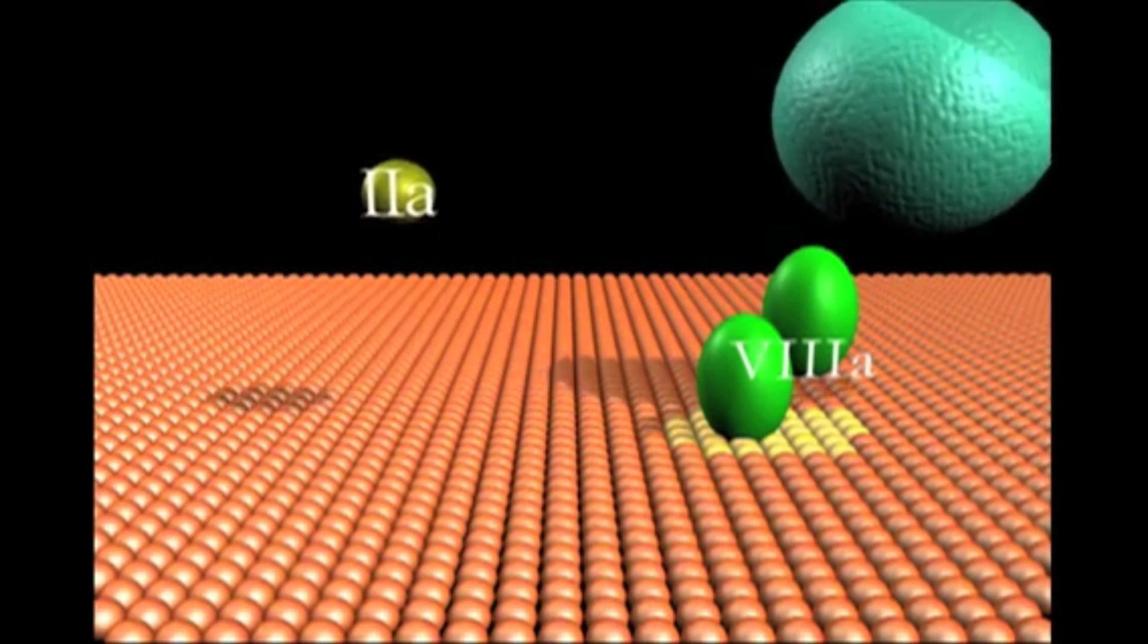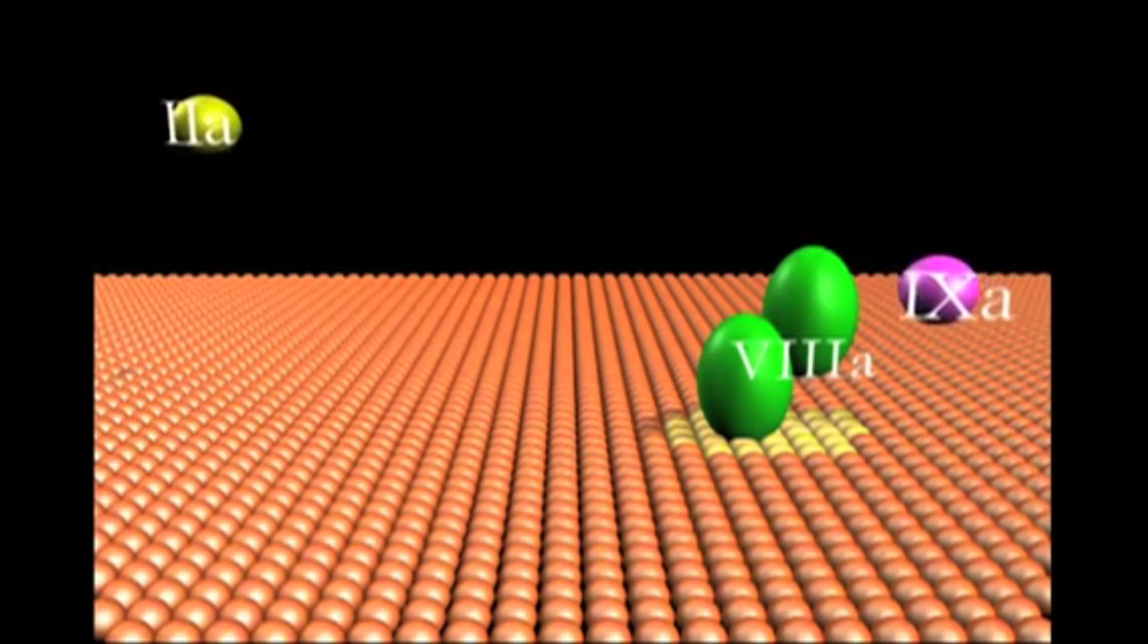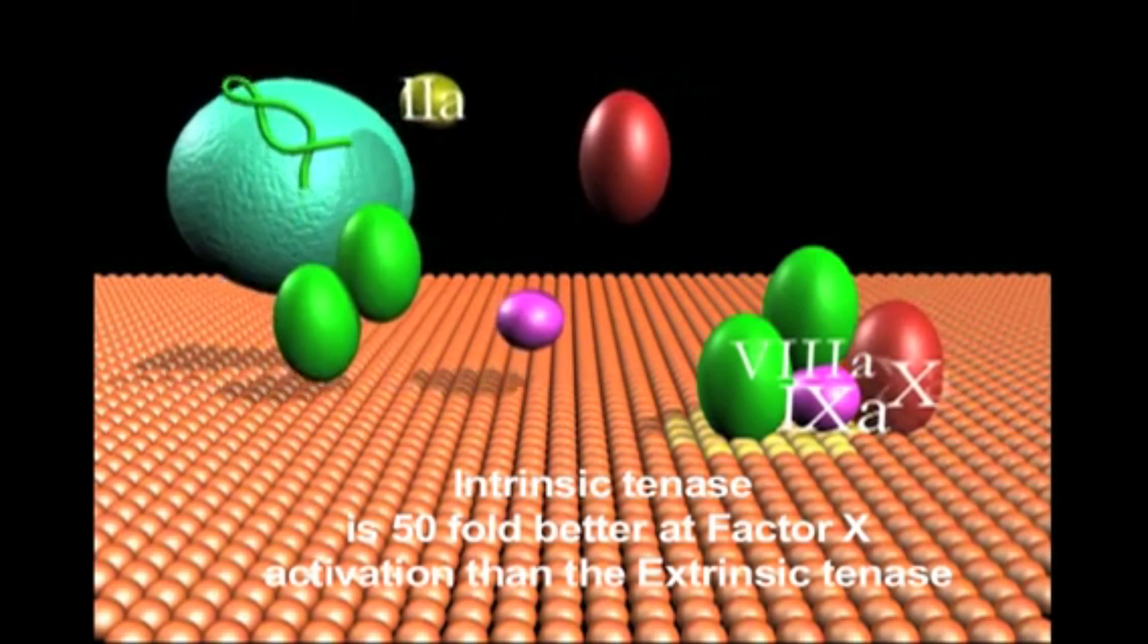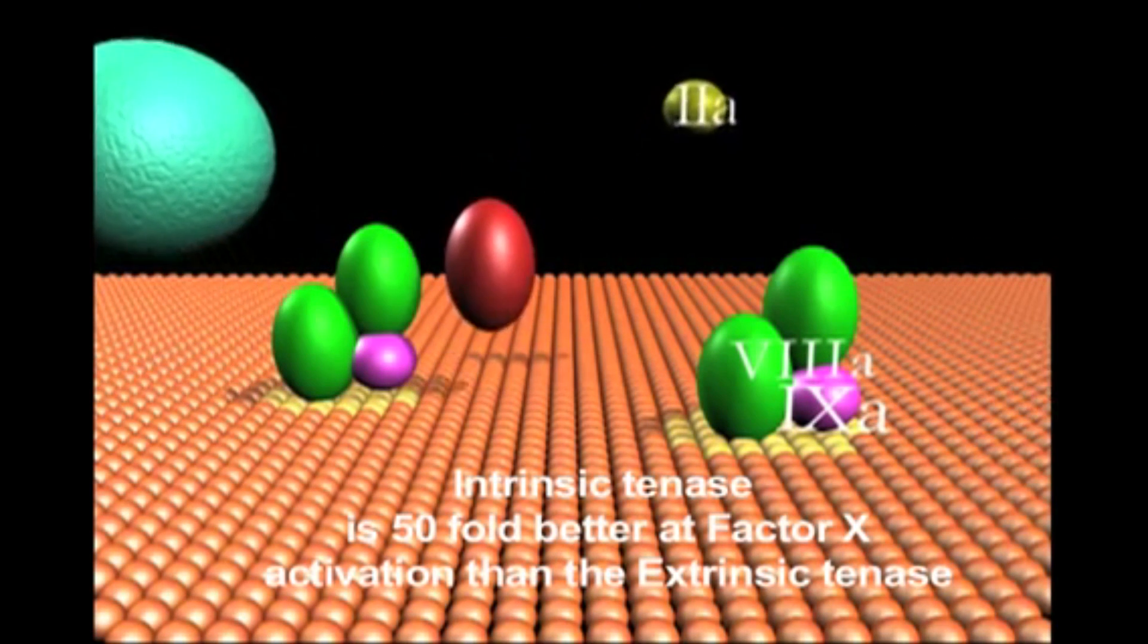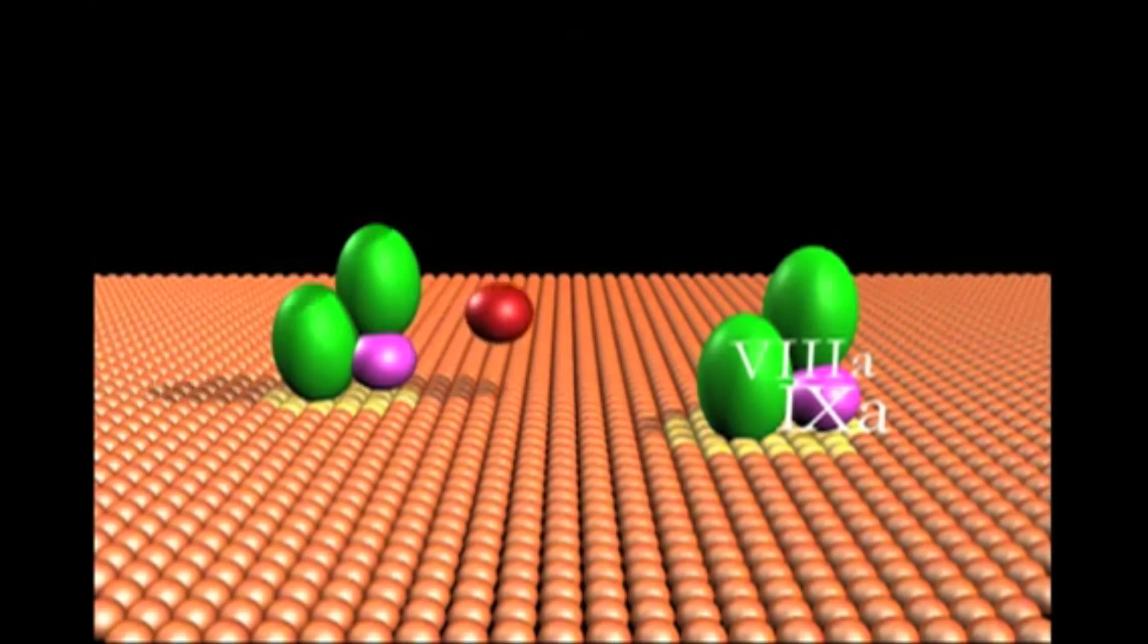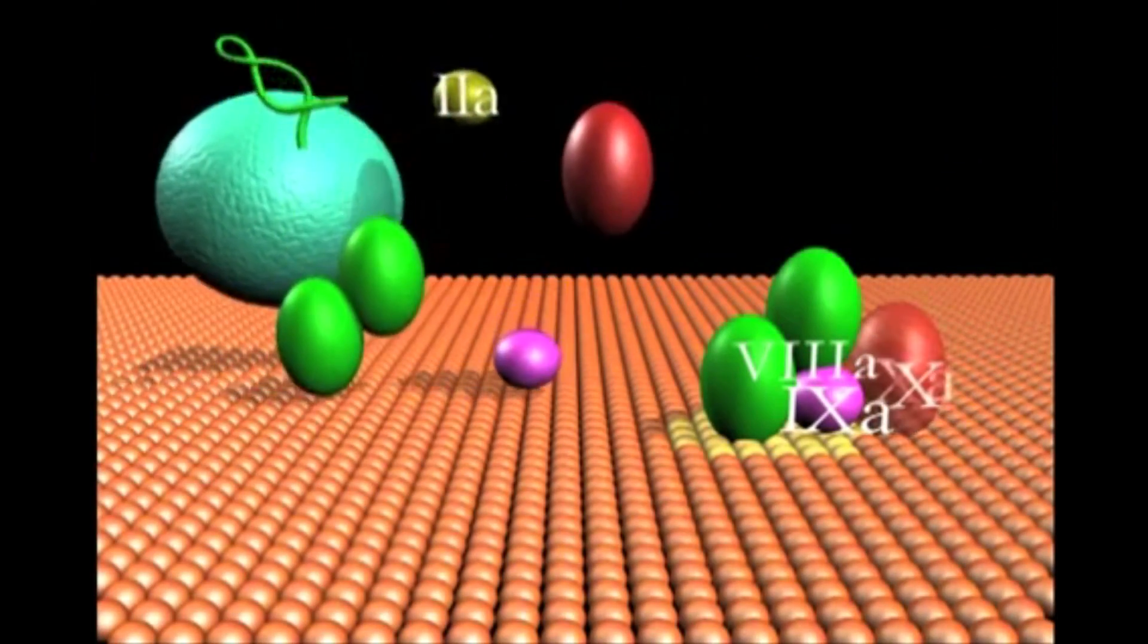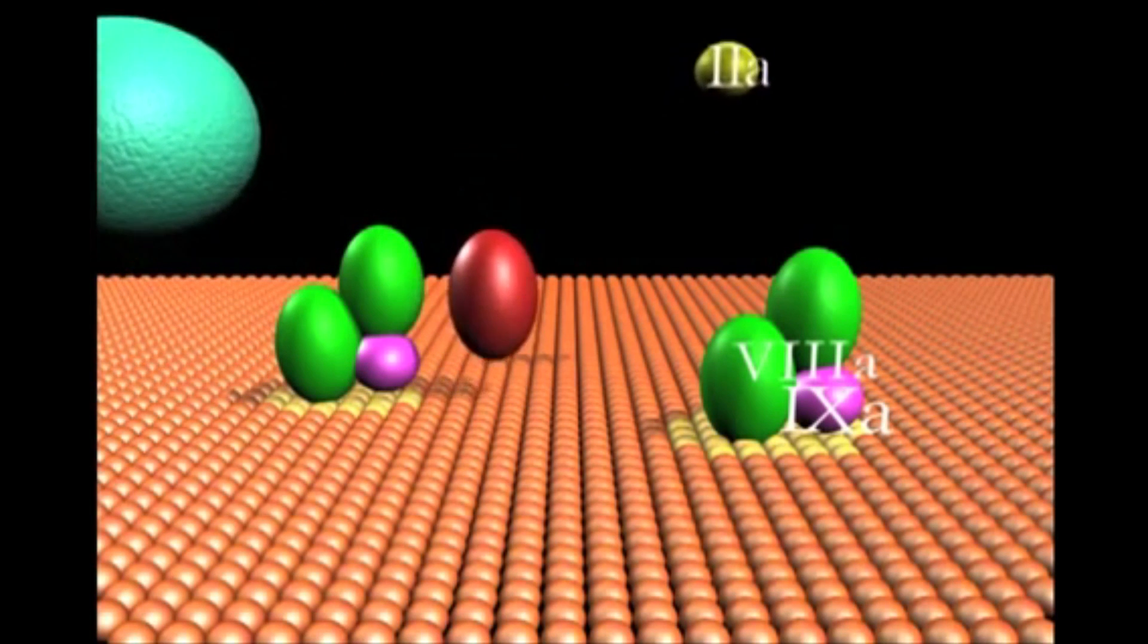The factor 8a, 9a complex is 50-fold more efficient for factor 10a activation than the tissue factor 7a complex, which is downregulated by TFPI, and the factor 8a, 9a complex assumes the major role in factor 10 generation.